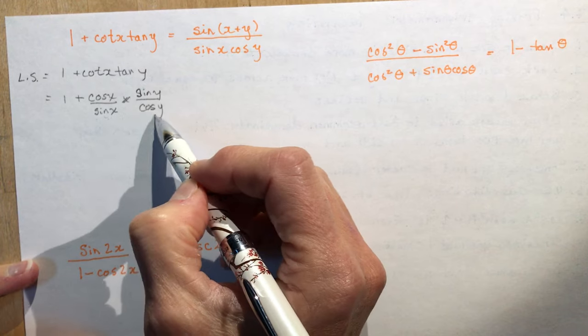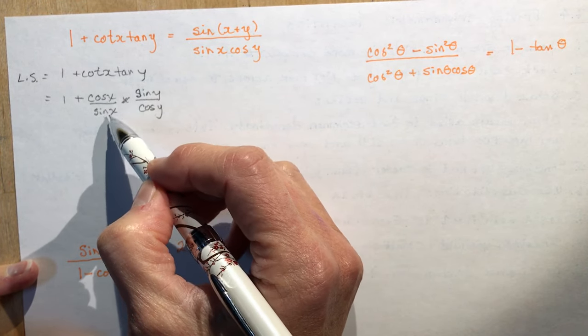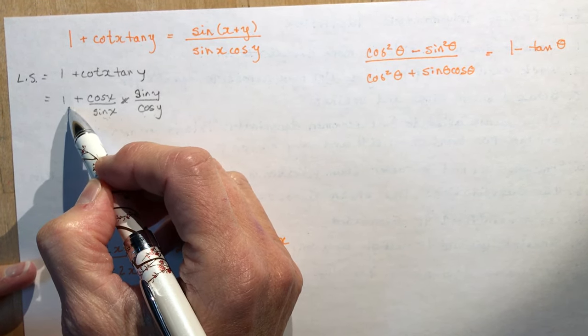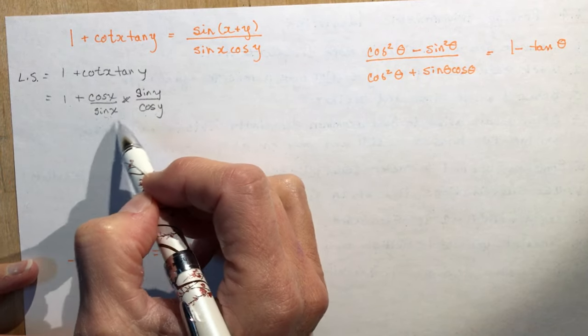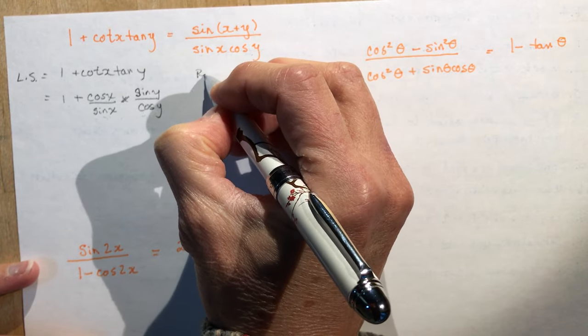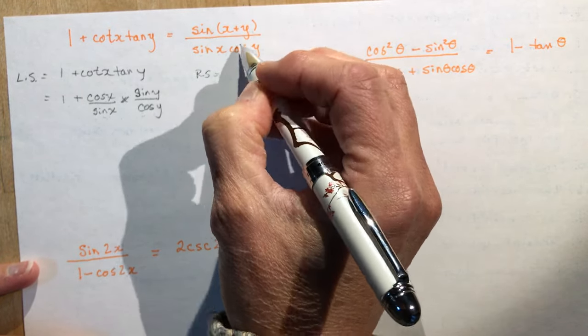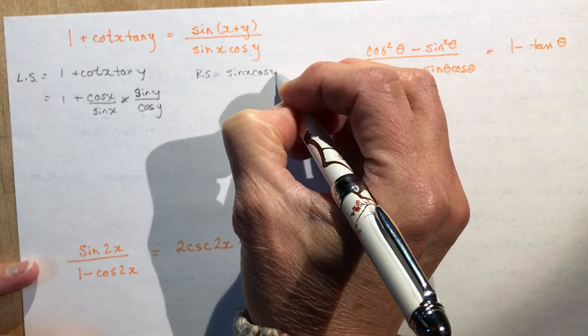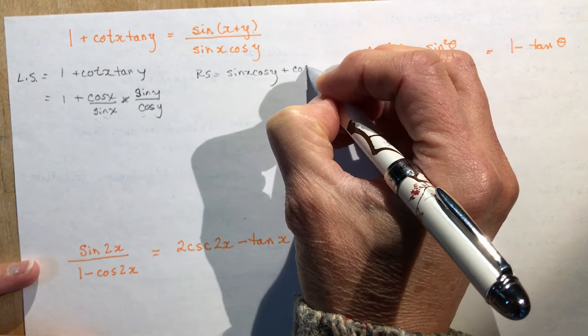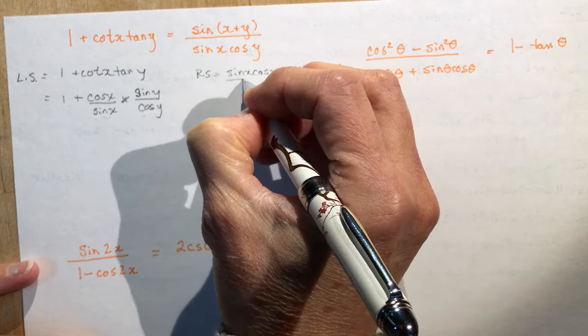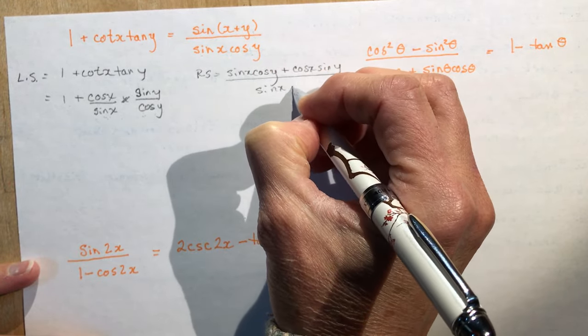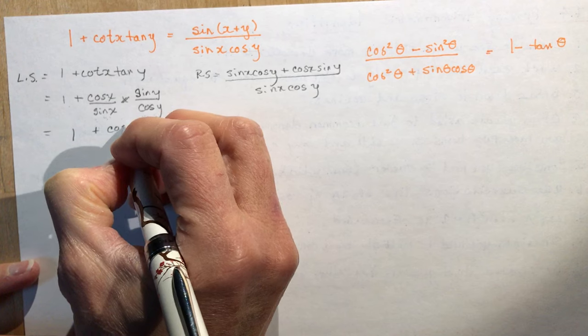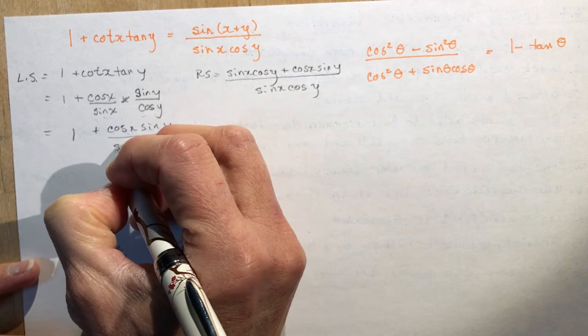So I have cos x sin y over sin x cos y. And I have a 1. So I'm either going to do something with that 1, or I'm going to... Well, what I'm going to do now is I'm just going to leave this side and run over here. Because the right side was pretty complicated with this addition formula. So sin(x + y), remember, is sin x cos y + cos x sin y. And that's all over sin x cos y.